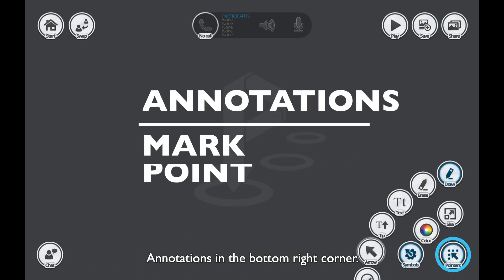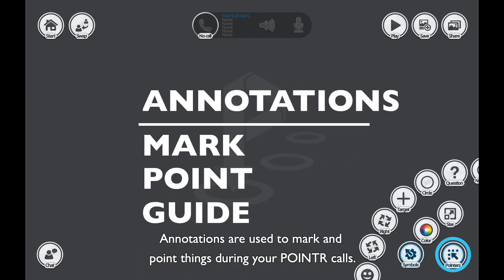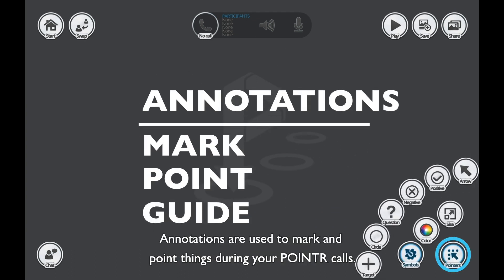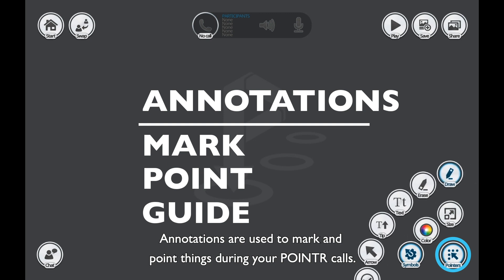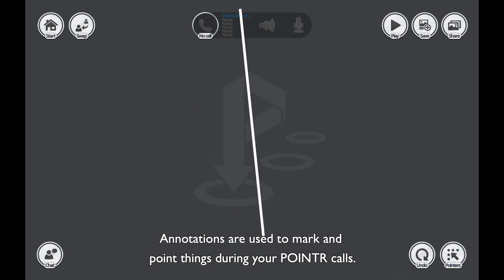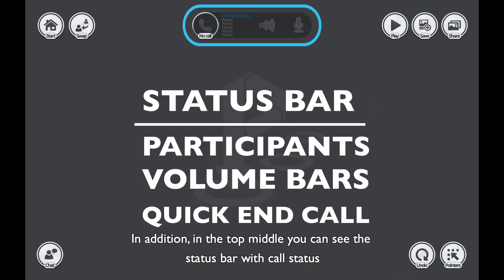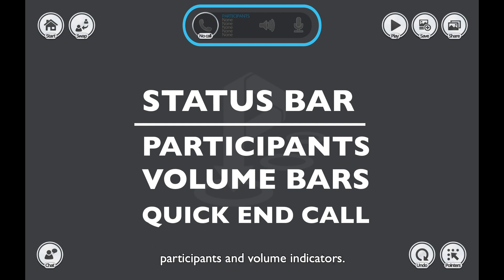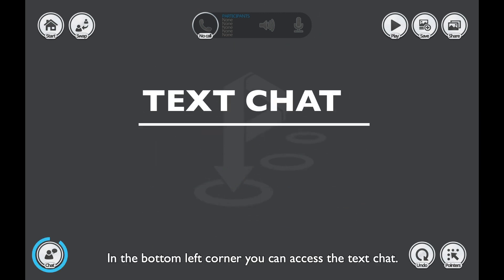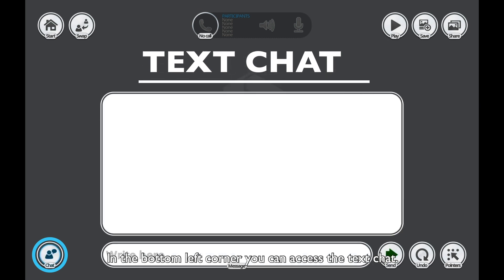Annotations are in the bottom right corner. Annotations are used to mark and point things during your Pointer calls. In addition, in the top middle you can see the status bar with call status, participants, and volume indicators. In the bottom left corner you can access the text chat.